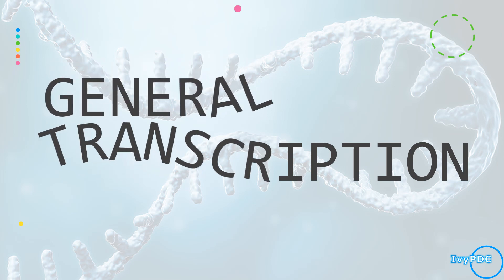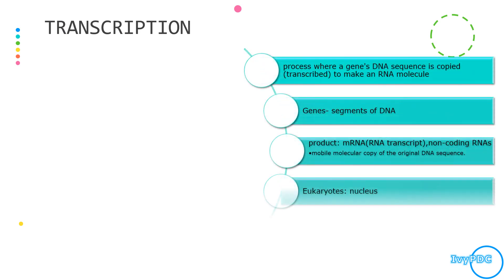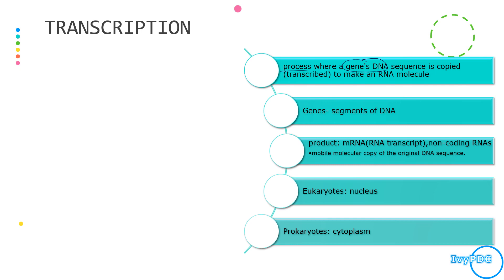Let's now discuss the general process involved in transcription. Transcription is defined as a process where a gene's DNA sequence is copied — or in other words, transcribed — to make an RNA molecule. The main goal of transcription is to copy or duplicate a DNA sequence in the form of an RNA.